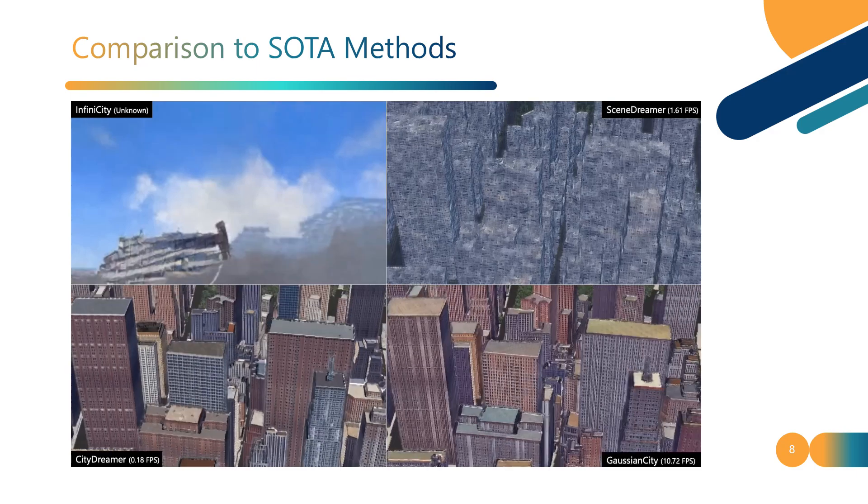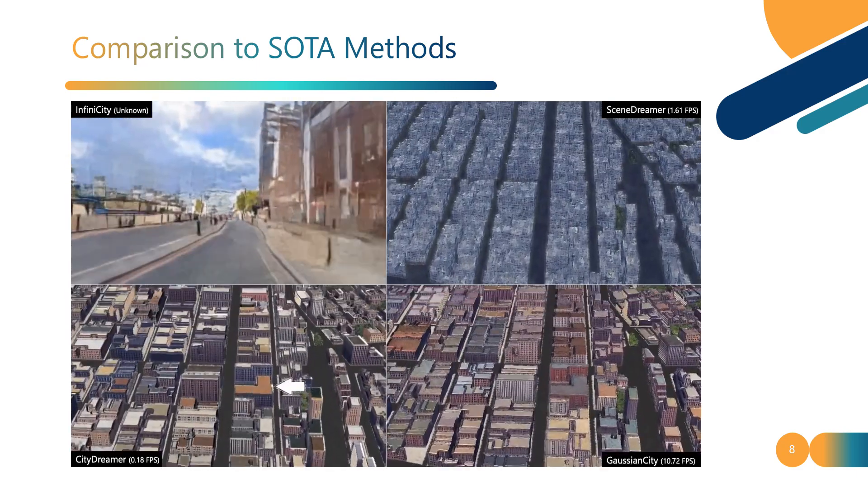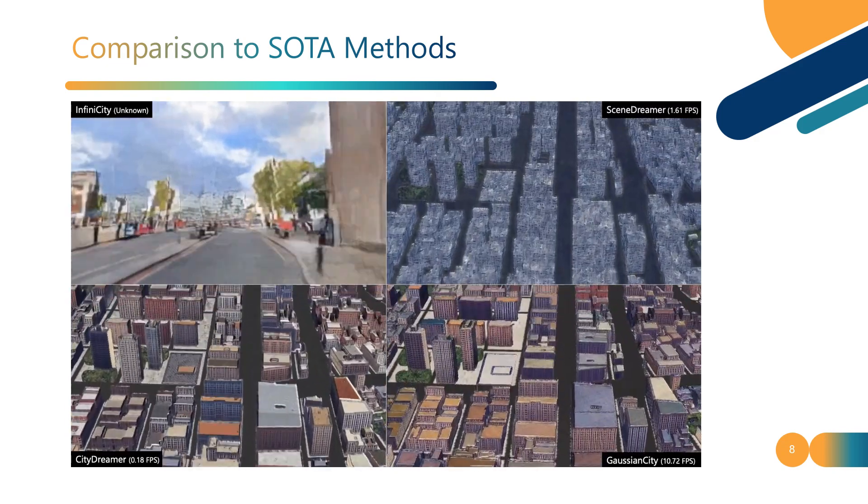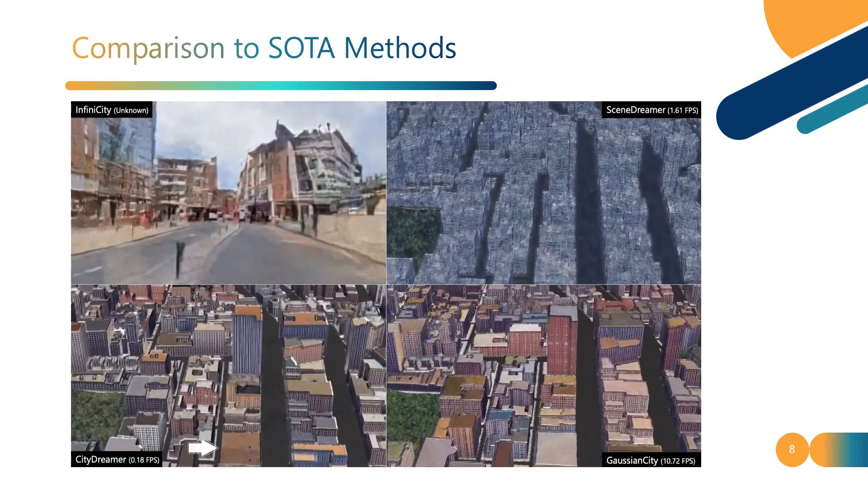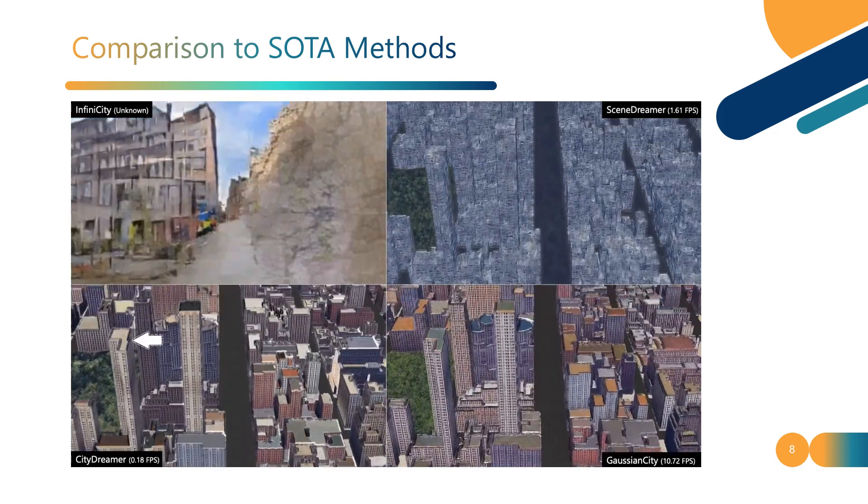Here, we show the comparison results to the state-of-the-art methods, including Infini City, Scene Dreamer, and City Dreamer. The experimental results show that Gaussian City generates cities of higher quality at a significantly faster speed.